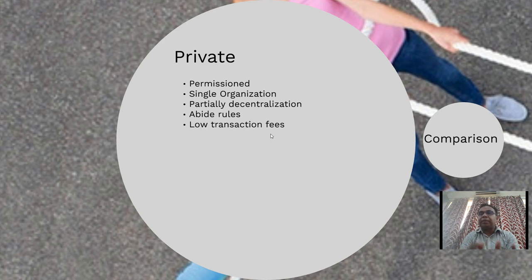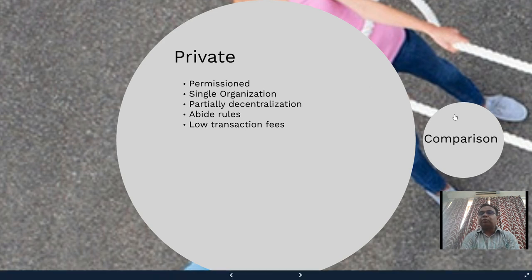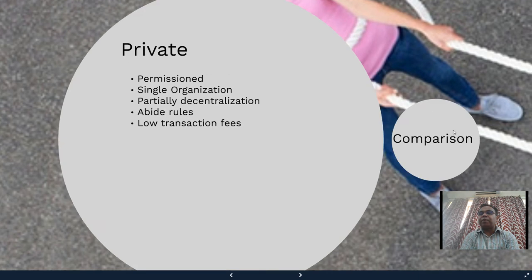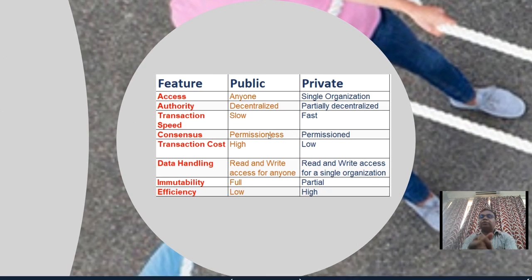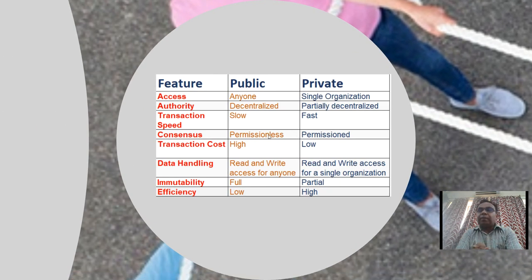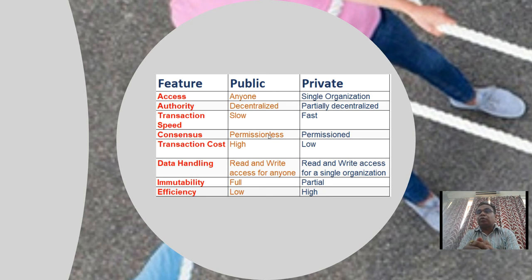Let's compare these two. The difference between public and private comes down to different features. In terms of access, in a public blockchain anyone can access it. In a private blockchain, access depends on the single organization — only those granted permission by the organization can access it.